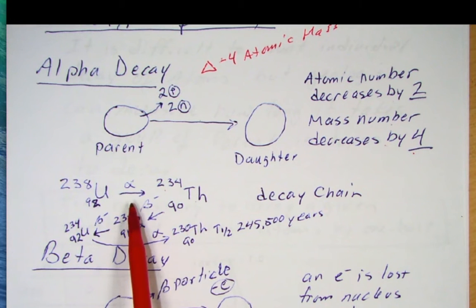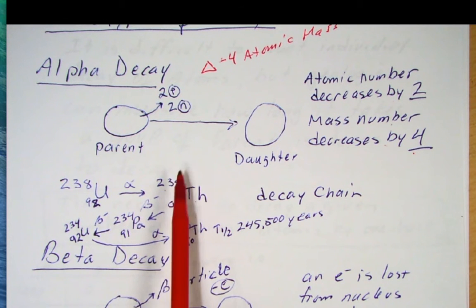But for now, just understand that this alpha decay is basically a big particle. In fact, they call it the alpha particle. It's a pretty big particle. Two protons, two neutrons.